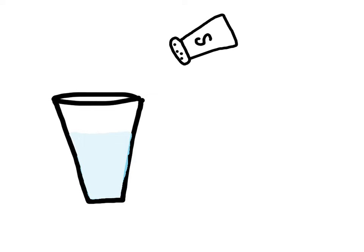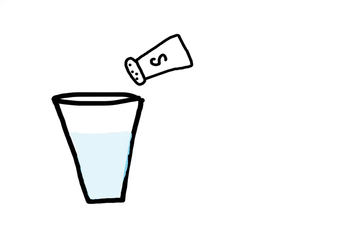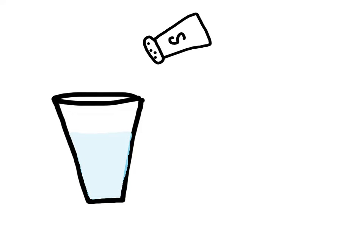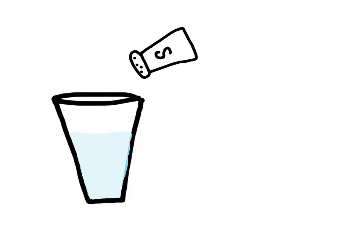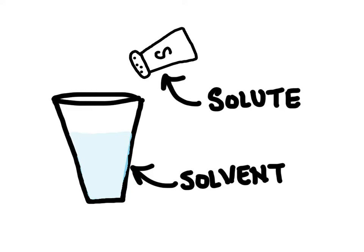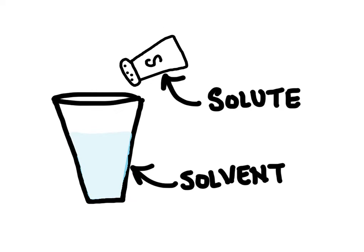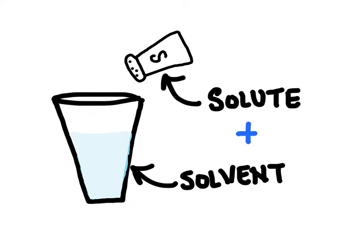Just as a refresher, when we say solute particles, we mean adding something into a solvent. In this case I'm putting some salt into water, so water would be the solvent and salt would be the solute. When we're talking about a colligative property, we're talking about the amount of solute particles dissolved into the solvent. Together they're going to form a solution.